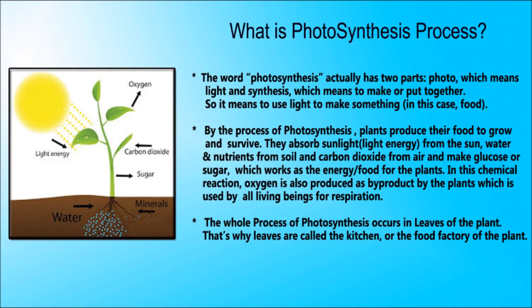What is the photosynthesis process? The word photosynthesis actually has two parts: photo, which means light, and synthesis, which means to make or put together. So it means to use light to make something — in this case, to make food. By the process of photosynthesis, plants produce their food to grow and to survive.